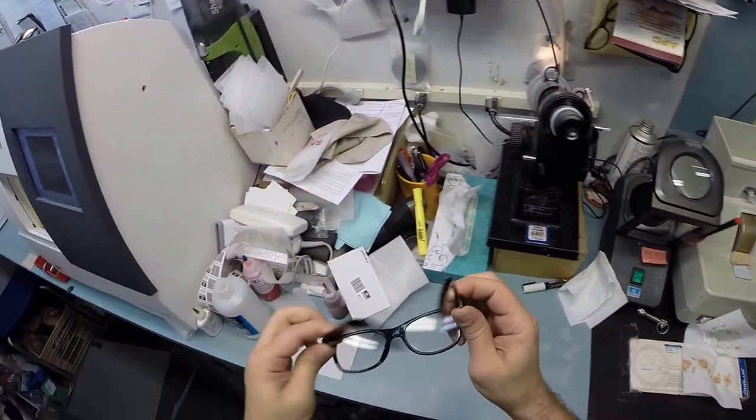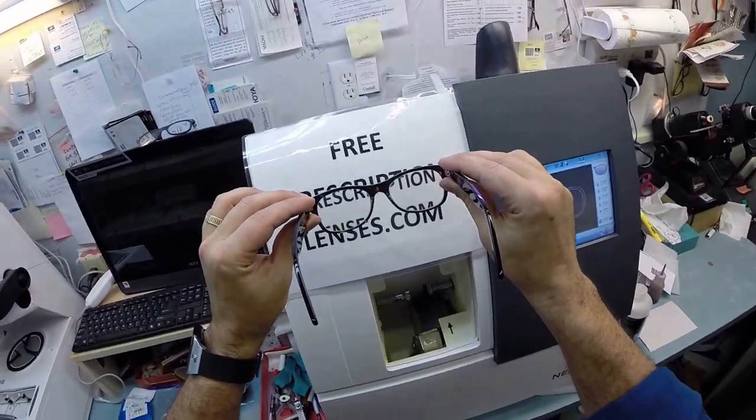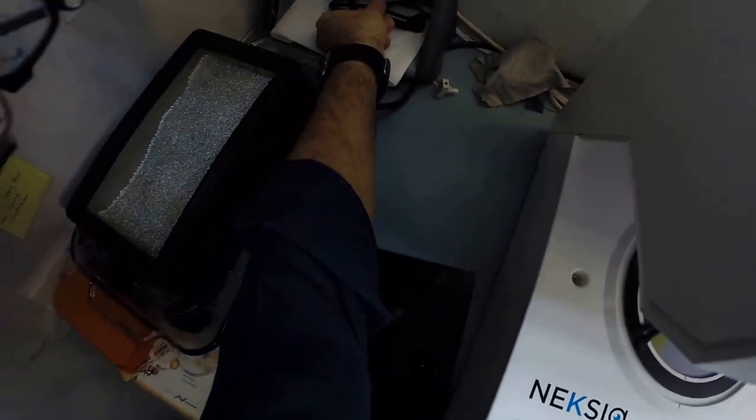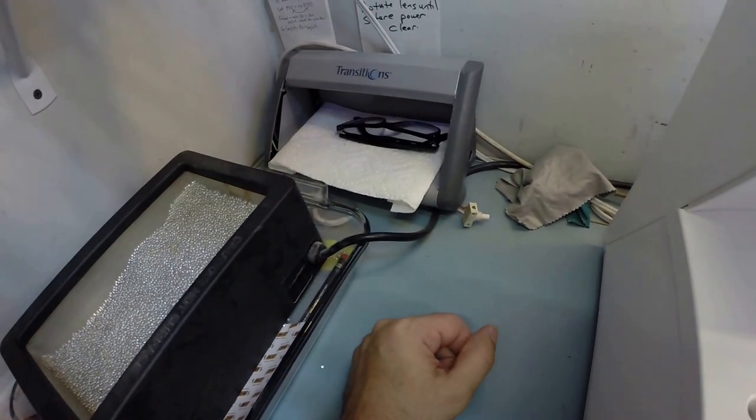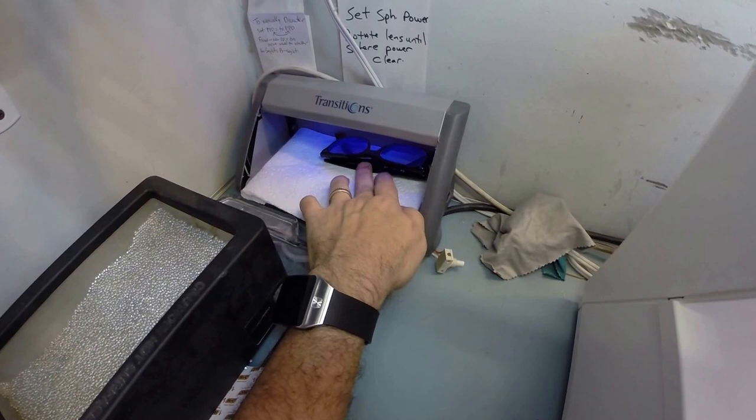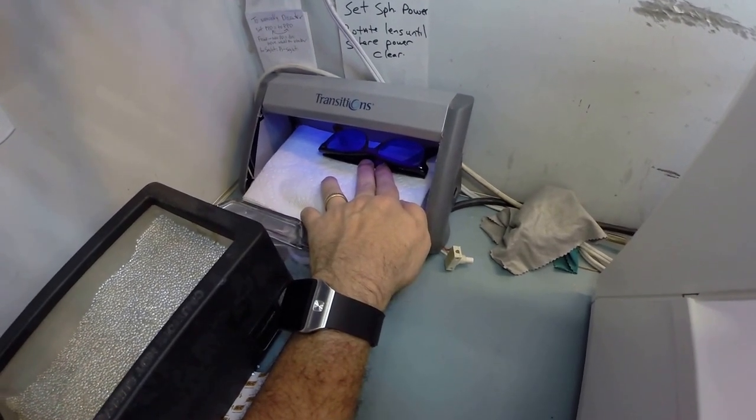This is what your lenses look like while they are clear. I'm going to go ahead and activate the transitions portion of your lens. I'm going to expose them to a strong burst of ultraviolet light. As you can see, it takes about 30 to 45 seconds for transition lenses to darken. It takes a little bit longer when you come back inside, about 45 seconds to a minute to a minute 15.